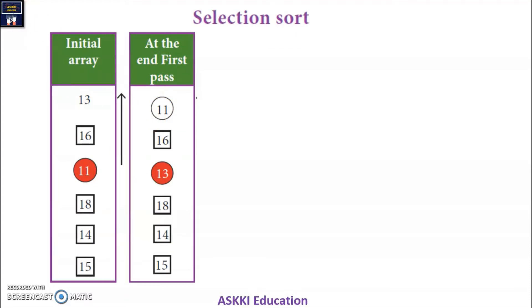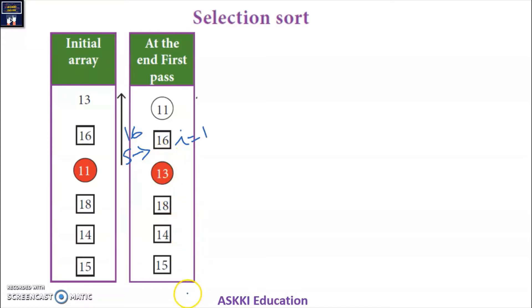Now the second iteration begins. That is the second element, so I is 1. The current value of S is set to the element at position 1, which is 16. We compare element by element. It is the smallest element so far. We compare 16 to 13. We know that 13 is smaller, so now S is updated to 13.